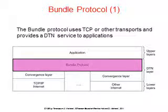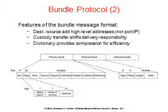The Bundle Protocol. A convergence layer is used so that one bundle protocol can run over TCP and other transport layers. Since different transport protocols have different interfaces, convergence layers act as glue to join those interfaces together. The bundle header includes source and destination high-level addresses, cost, delivery responsibility, and a dictionary for compression efficiency.